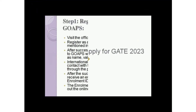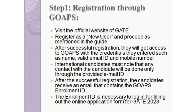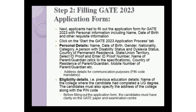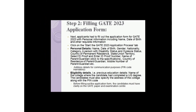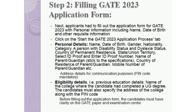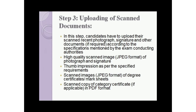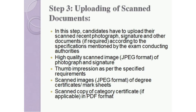Let us look at the steps to apply for GATE. Candidates must visit the official website of GATE and register themselves to generate their enrollment ID. Candidates have to fill the GATE application form with their personal information including name and date of birth, as well as their educational details.